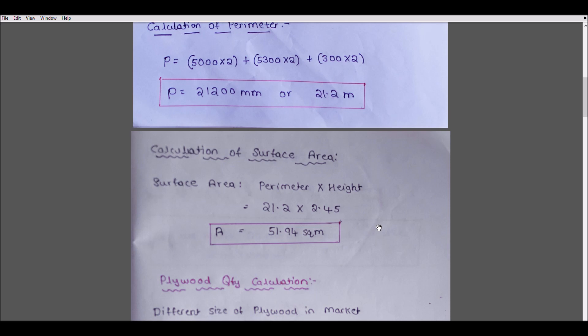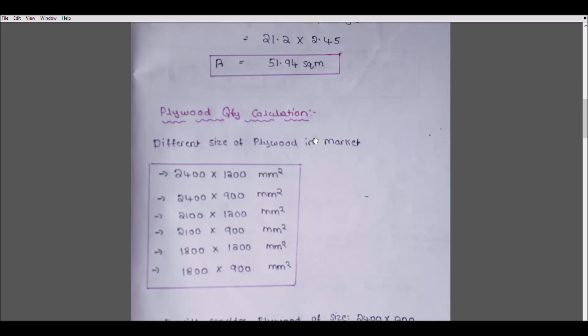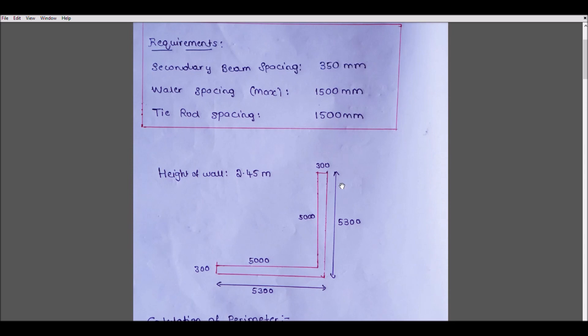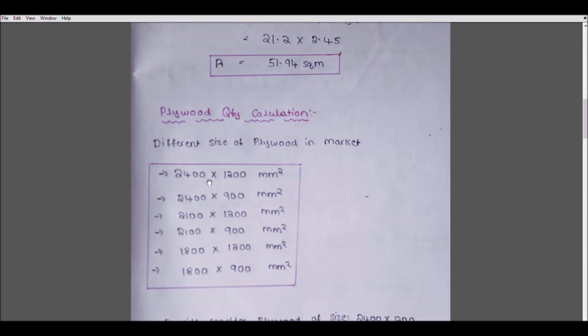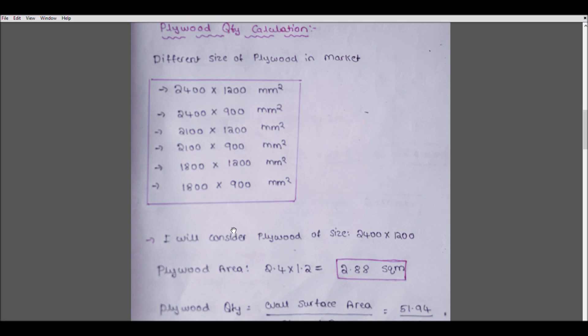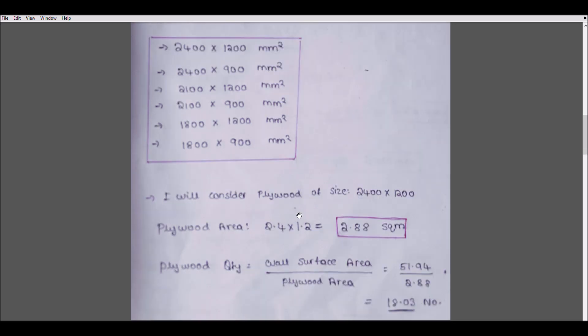First thing we will calculate is plywood. In plywood calculation, first we will understand the different types of plywood available in the market. These are five or six different types that I know, so I mentioned here. It depends on you which size of plywood you want to take. I will take 2.4 × 1.2 meters because my height is 2.45, so approximately this 2.4 will fit. The plywood area is 2.4 × 1.2 = 2.88 square meters.